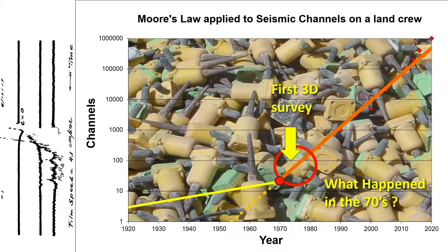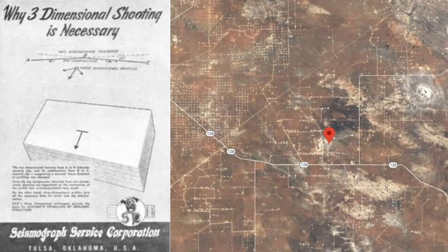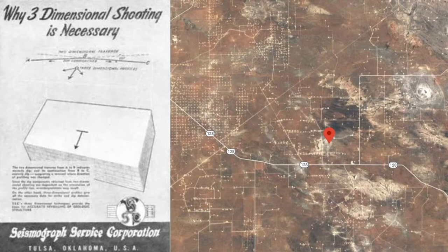3D acquisition became possible. The concept of 3D seismic acquisition has been around for a long time — the advert on the left is from 1947. But the first 3D onshore seismic acquisition was not conducted until 1972. It involved 500,000 traces, and acquisition took a month. Today, some seismic crews record an equivalent number of traces in less than 30 seconds.